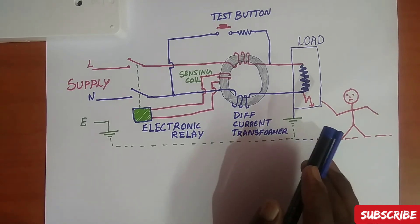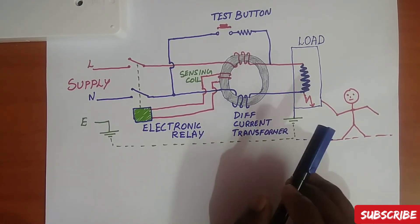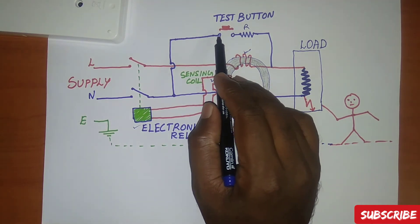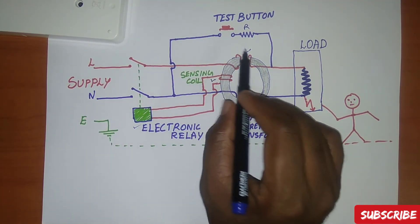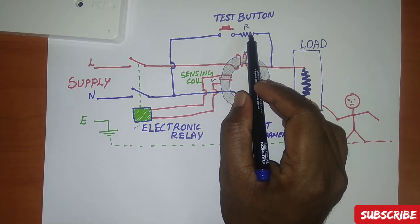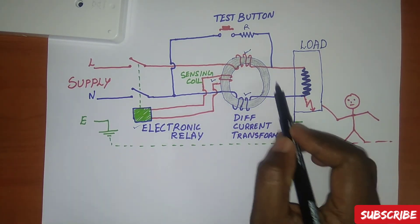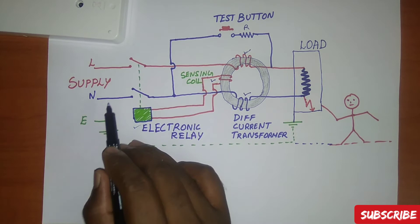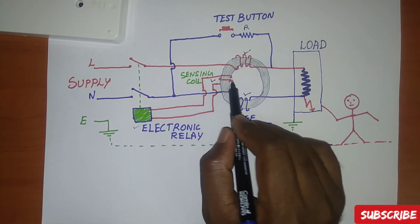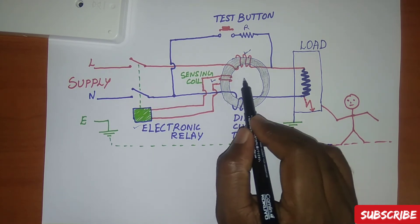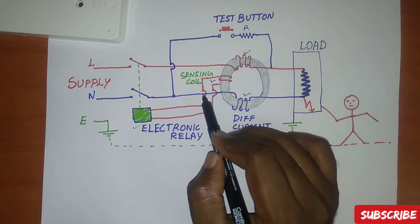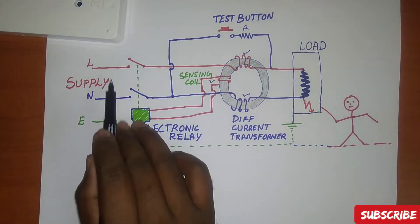I've drawn a simple circuit to explain how RCCB works, which should help you understand its working principle. The components used are: first, a test button — used to test whether the RCCB is working or not; second, a resistor; and third, a differential current transformer — used to measure line and neutral currents. There is also a sensing coil, which operates if there is any imbalance between line and neutral, and an electronic relay.